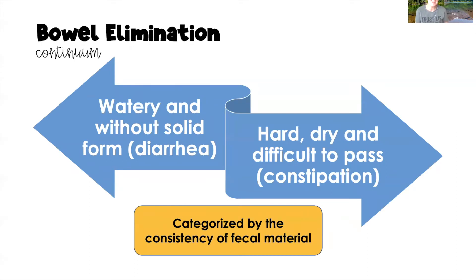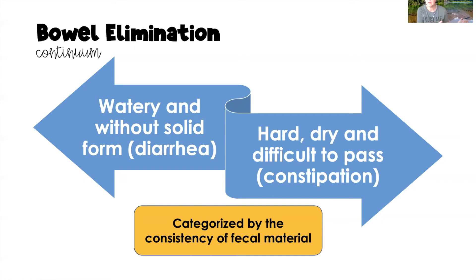For bowel elimination, we look at a continuum — a format we use a lot in the core concepts series. We hope that clients are sitting right in the middle with normal bowel function. However, many clients will be far on one side with watery, very liquid stool, which is called diarrhea, or very far on the opposite end with very hard, dry, difficult-to-pass stool known as constipation. We categorize bowel elimination based on the consistency of the fecal matter.